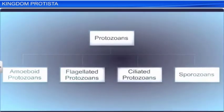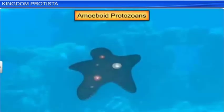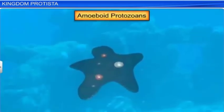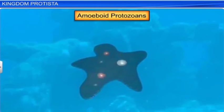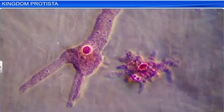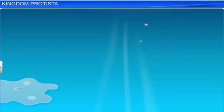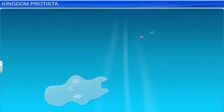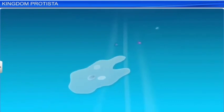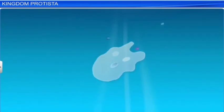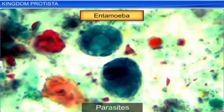The amoeboid protozoans live in both fresh water as well as in moist soils. They use false feet called pseudopodia in order to move and to capture prey. Some amoeboid protozoans like Entamoeba are parasites.